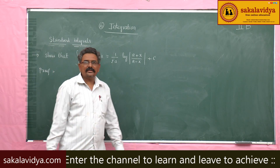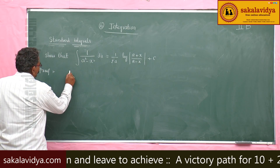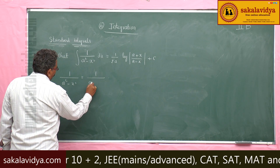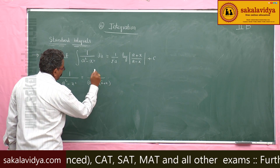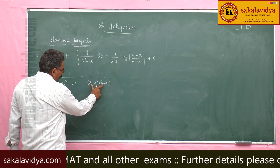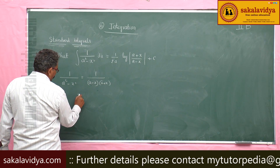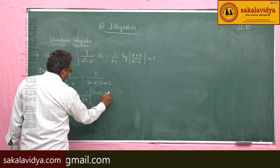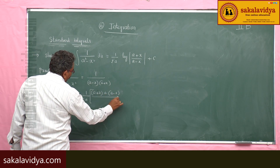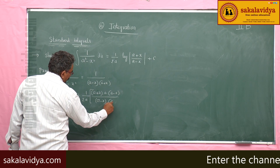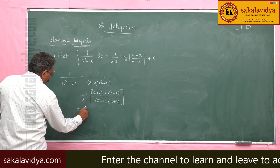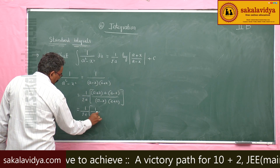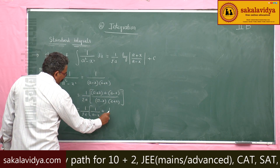First we find the partial fractions of 1/(a² − x²). We write 1/(a² − x²) = 1/((a − x)(a + x)). Adding (a + x) and (a − x) gives 2a, so we write this as (1/2a)·[(a + x) + (a − x)] / [(a − x)(a + x)], which separates to (1/2a)·[1/(a − x) + 1/(a + x)].